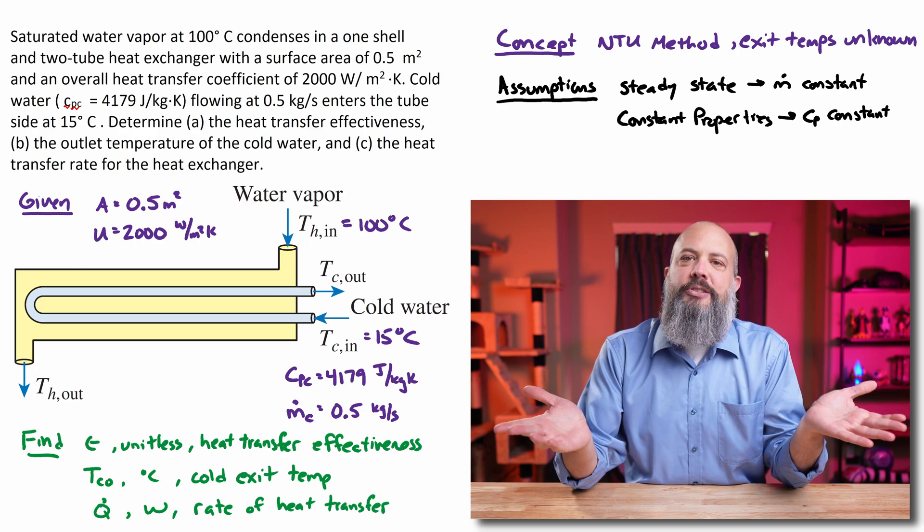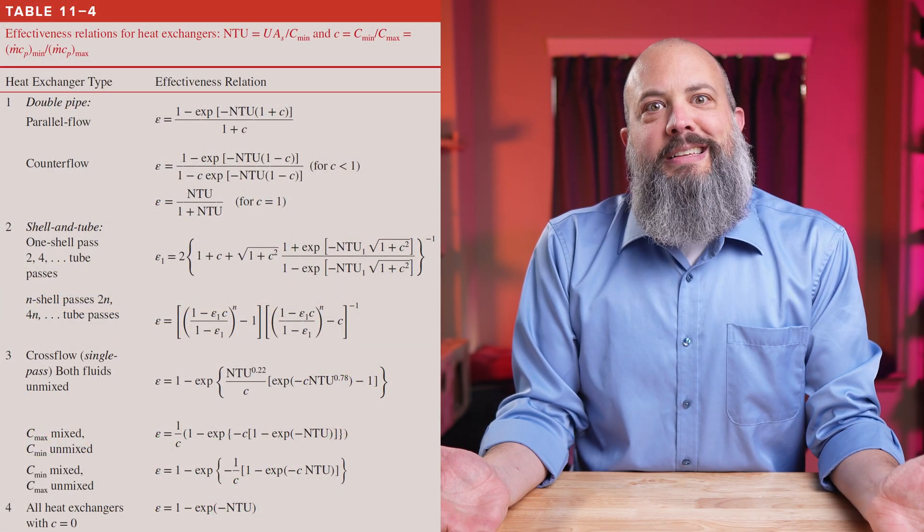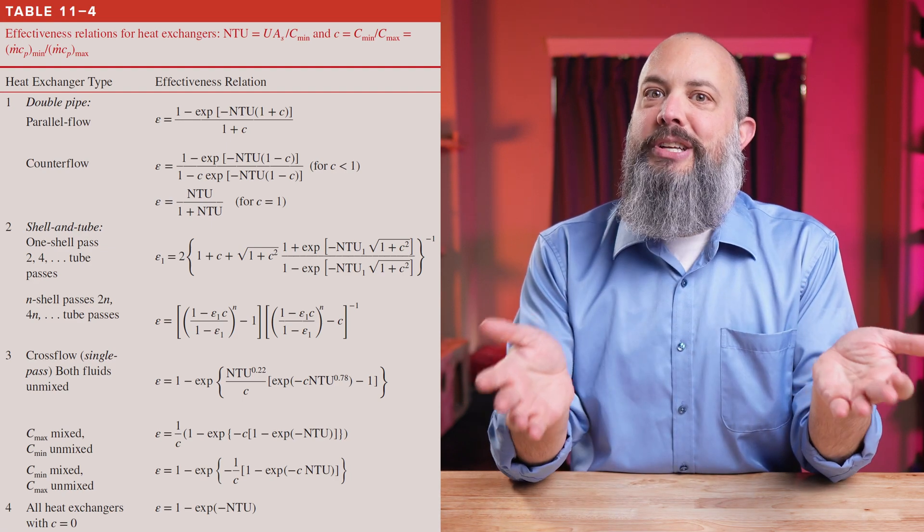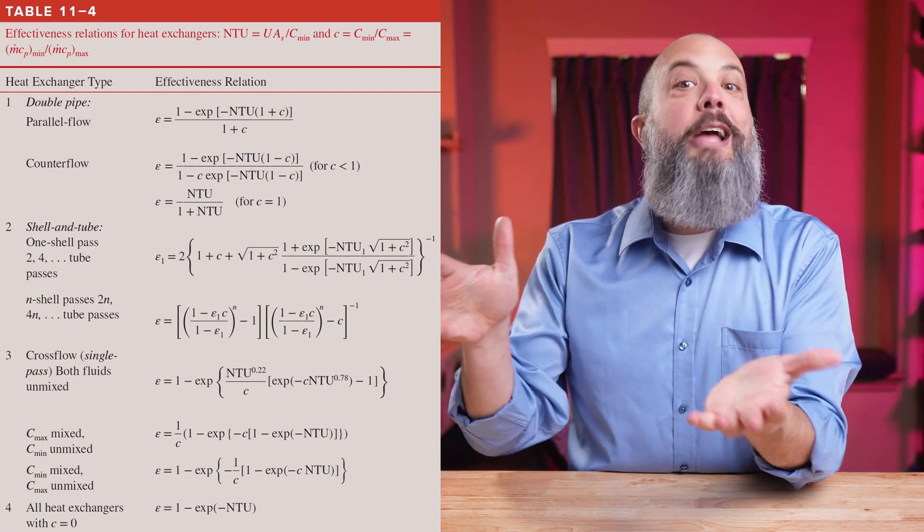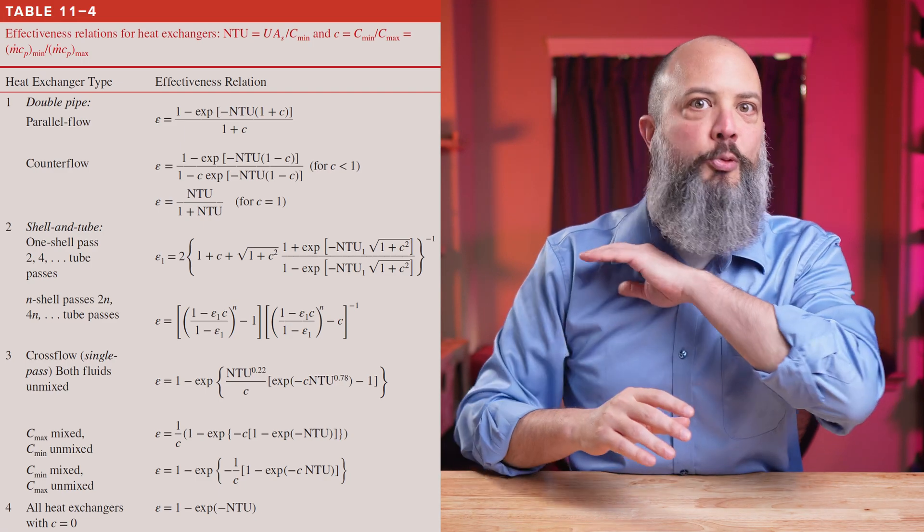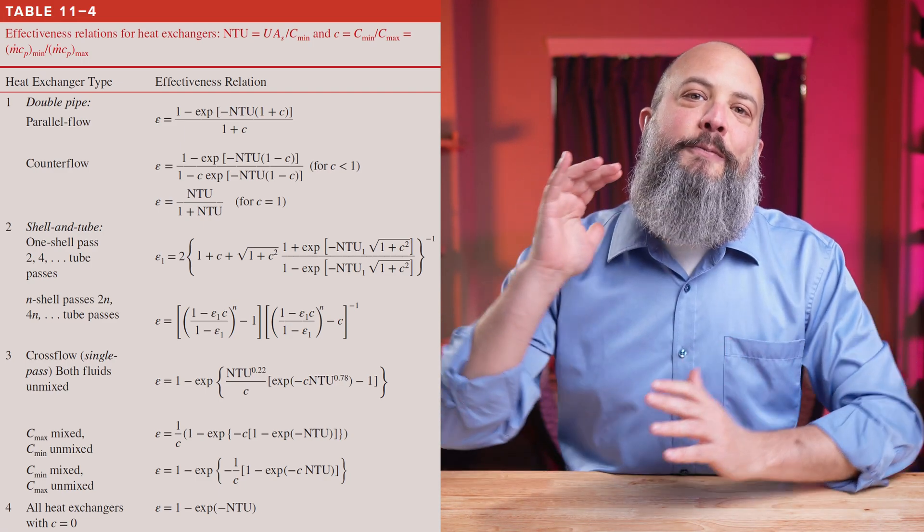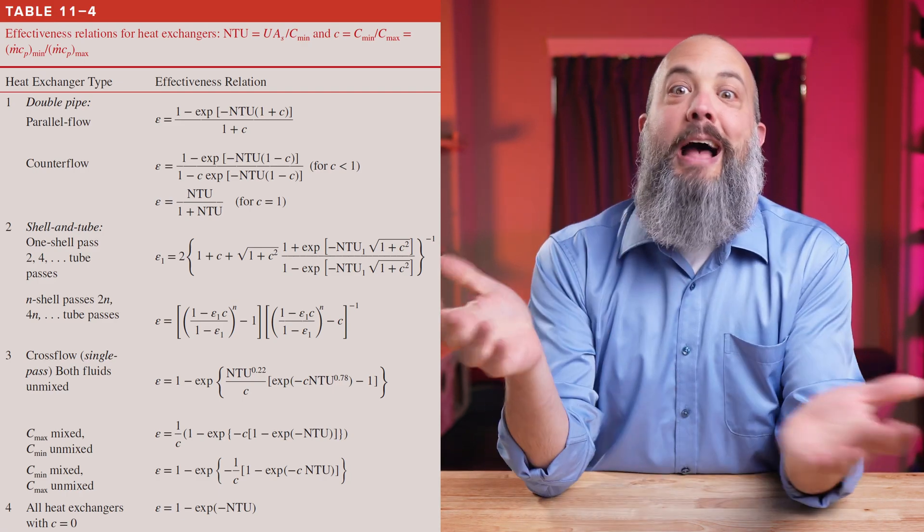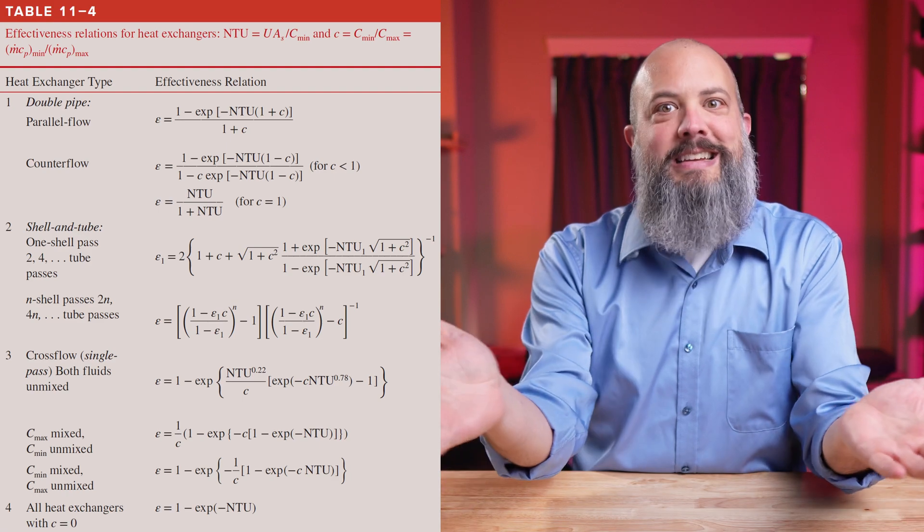My textbook has a table that lists effectiveness equations for different styles of heat transfer: parallel flow, counter flow, shell and tube, cross flow. For this one shell pass, two tube pass, I actually have an equation for it, so I can just write that down right off the bat.